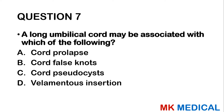Question 7: A long umbilical cord may be associated with which of the following? A — cord prolapse. B — cord false knots. C — cord pseudocyst. D — filamentous insertion of the cord. The length of the cord is directly proportional to the risk of prolapse. A prolapsed cord compressed by the fetal presenting part may lead to cord compression that can kill the child. The answer is A.